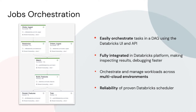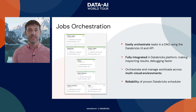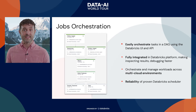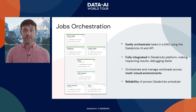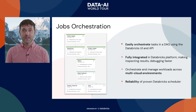That brings us to improved orchestration in Jobs. The Databricks job scheduler previously could schedule just a single task, but now you can orchestrate DAGs of tasks using either the UI or the API. This orchestration is fully integrated in the Databricks platform, so you can set ACLs, inspect results, and get direct access to cluster logs for debugging. It works the same way across clouds, so you can use it wherever the data is or wherever you get the best price on computing.